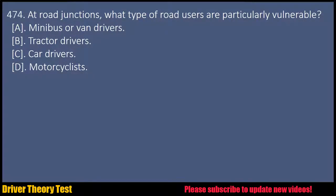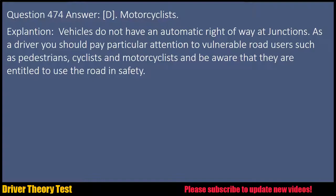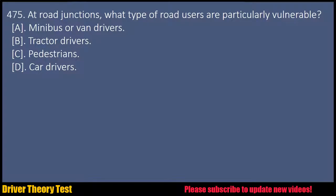Question 474: At road junctions, what type of road users are particularly vulnerable? A. Minibus or van drivers. B. Tractor drivers. C. Car drivers. D. Motorcyclists. Answer: D. Motorcyclists. Explanation: Vehicles do not have an automatic right-of-way at junctions. As a driver you should pay particular attention to vulnerable road users such as pedestrians, cyclists and motorcyclists, and be aware that they are entitled to use the road in safety.